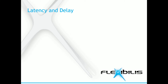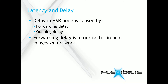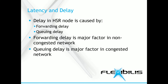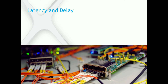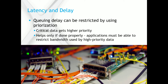The delay in an HSR node is caused by two main issues. The first is the forwarding delay, which is the delay caused by a node forwarding the frame from input to output. The second is the queuing delay, caused by other traffic. The forwarding delay is the major factor in a non-congested network with low traffic. In a congested network, the queuing delay is dominant. The queuing delay can be restricted by using proper prioritization, meaning more important data gets higher priority. This helps only if applications are able to restrict bandwidth used by high priority data.